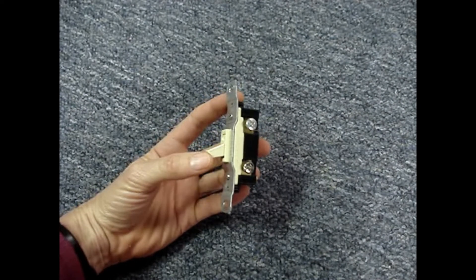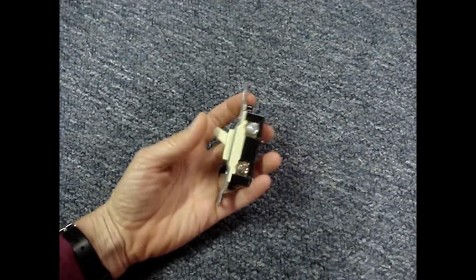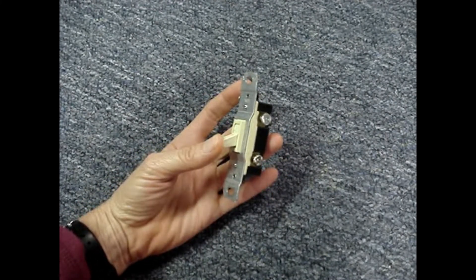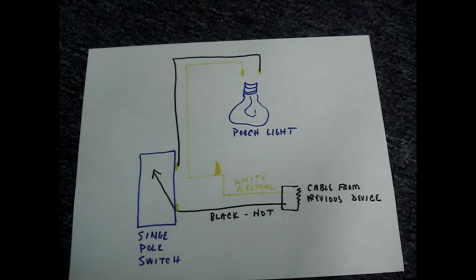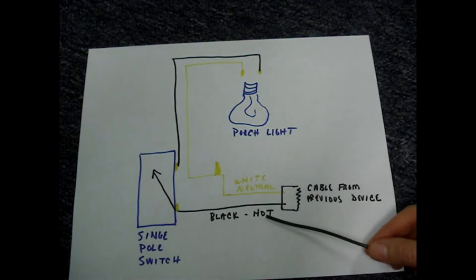A single pole switch turns a light on and off from one location. In 1952, when this house was built, they did not run ground wires. It's just a cable that contains a white wire, which is neutral, and a black wire, which is the hot.